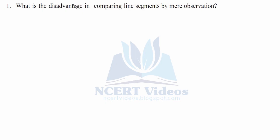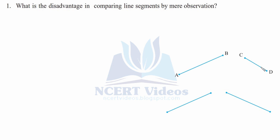Question one: what is the disadvantage in comparing line segments by mere observation? We will construct four lines, AB and CD. You can clearly observe that AB looks bigger, but in the case of these two we cannot exactly say which one is bigger. This is the main disadvantage in comparing line segments by mere observation.